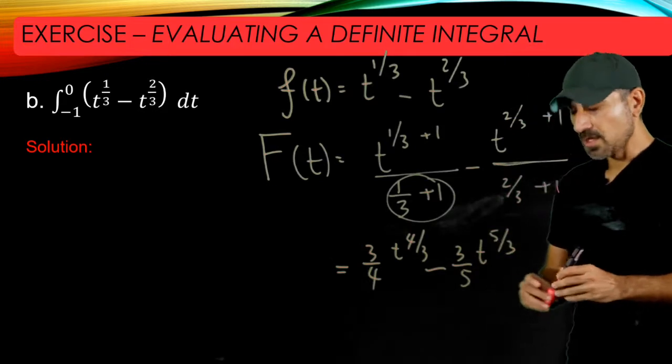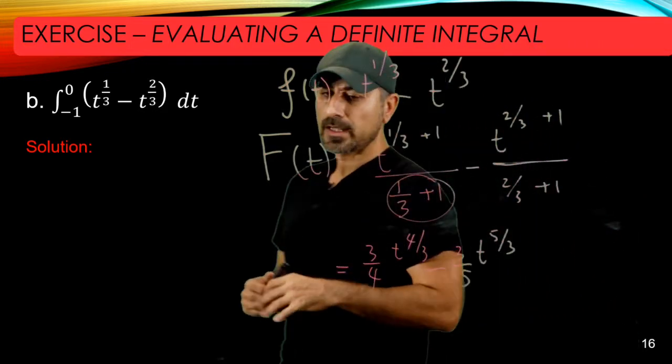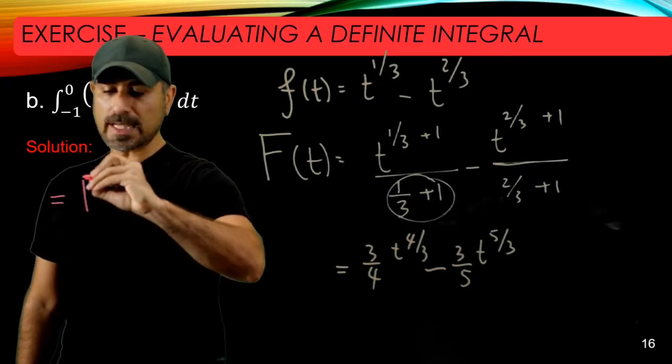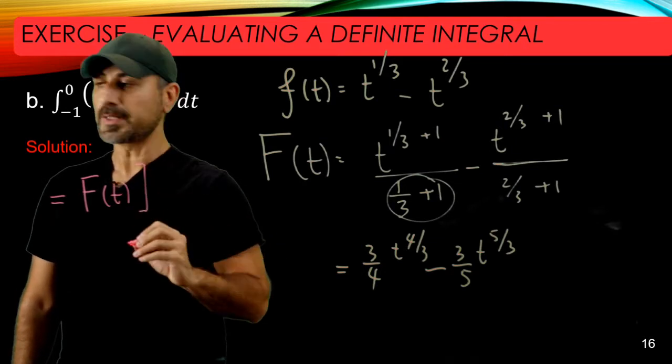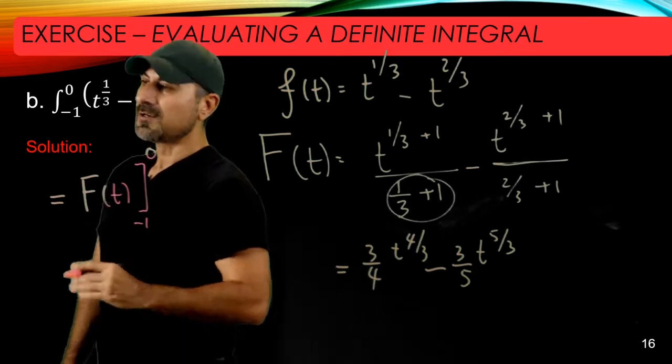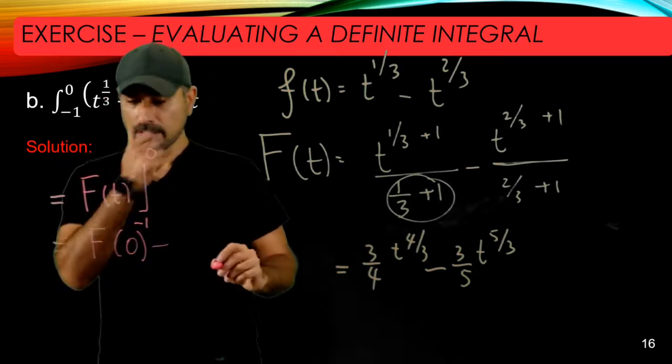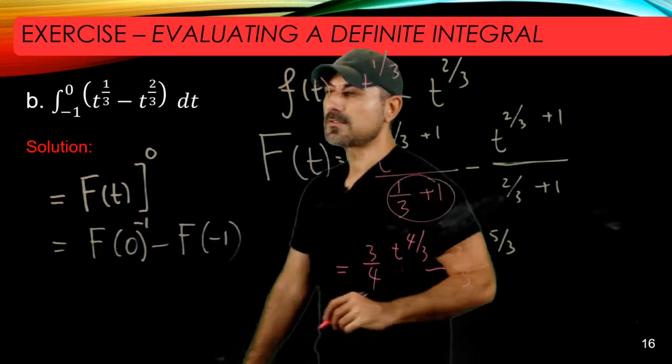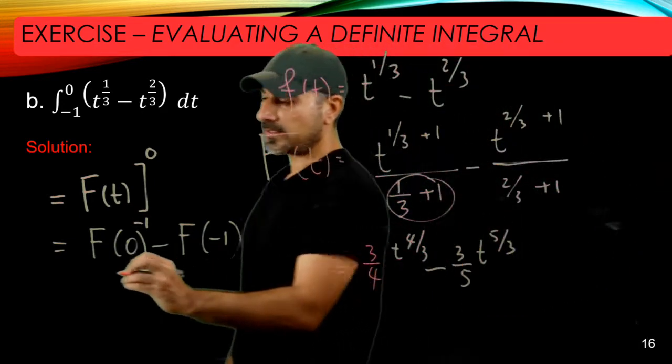In the next step, we're going to use the Fundamental Theorem of Calculus. We've got the anti-derivative of little f, so this equals capital F of t with the bracket notation, lower limit is -1, upper limit is 0. This essentially means you evaluate capital F at 0 and then evaluate capital F at -1 and subtract from F of 0.